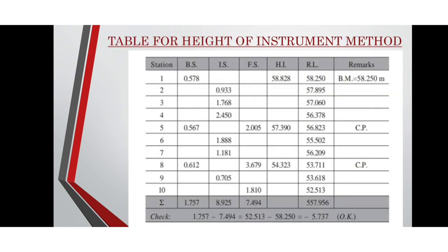Here is the table for the Height of Instrument method, showing back sight, intermediate sight, foresight, height of instrument, reduced level, and the change points. The first point is the benchmark at 58.250 meters. The fifth and eighth points are the change points. From the table, sigma back sight, sigma intermediate sight, sigma foresight, and sigma reduced level are calculated. We can observe that sigma back sight minus sigma foresight equals sigma reduced level minus the first reduced level, which equals −5.737. This proves that the method is correct.